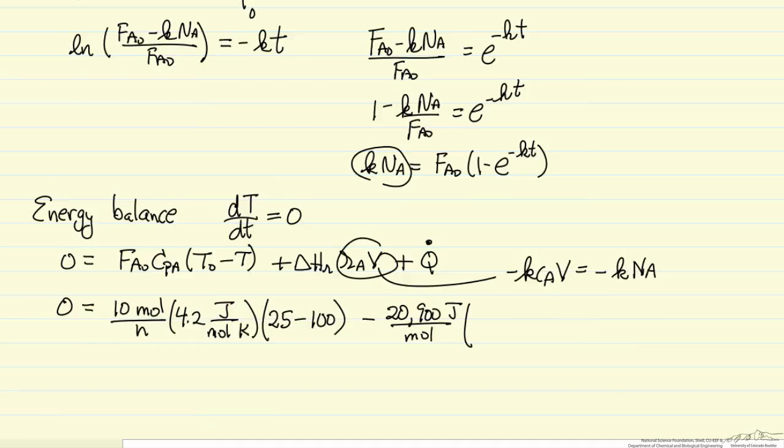The second term, I put the heat of reaction in joules per mole, so R sub A times V is minus K times Na, and so that's minus F A zero, which is 10 moles per hour.